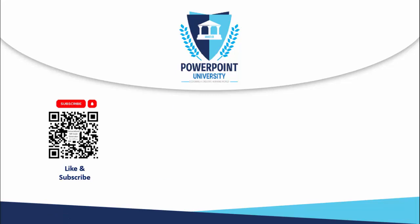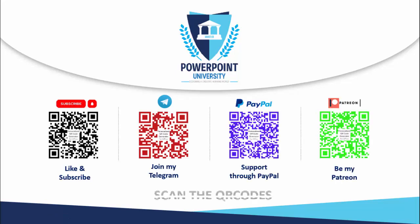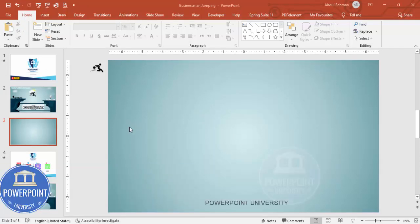If you're not subscribed to my channel PowerPoint University, please subscribe and enable the bell notification icon. You can join my Telegram group with the QR code and support my channel through PayPal or Patreon. So let's start the tutorial — add a new slide and change the background to a gradient fill background. Next I'm going to draw two cliffs or two kinds of mountains.